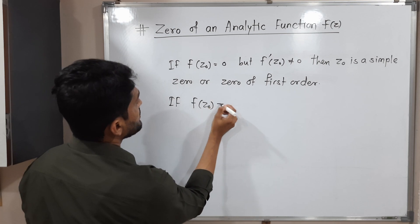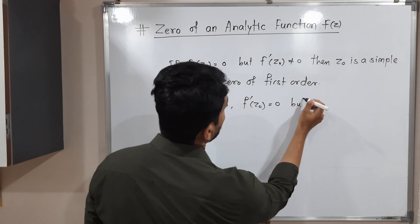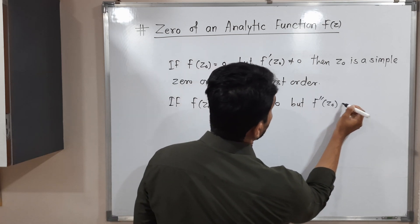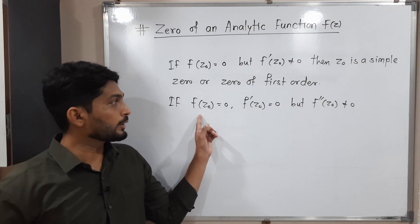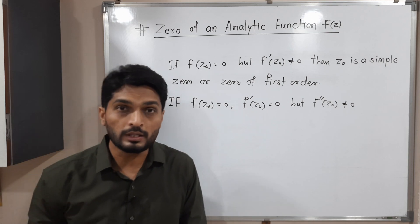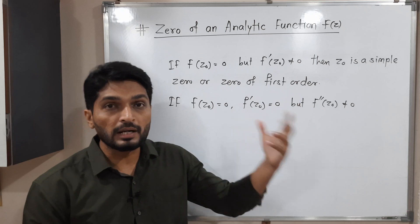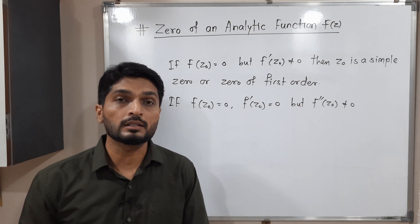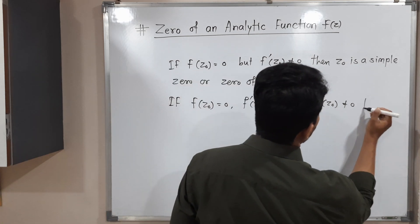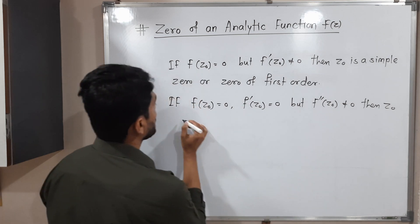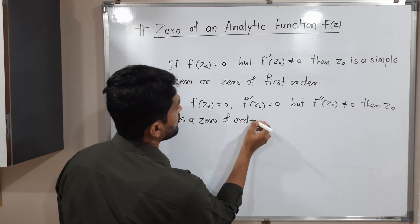If f of z-naught is 0, f-dash of z-naught is also 0, but f-double-dash of z-naught is non-zero — the value at the function is 0, the first derivative is also 0, but the second derivative is non-zero — then we say it is a zero of order 2. Then z-naught is a zero of order 2.